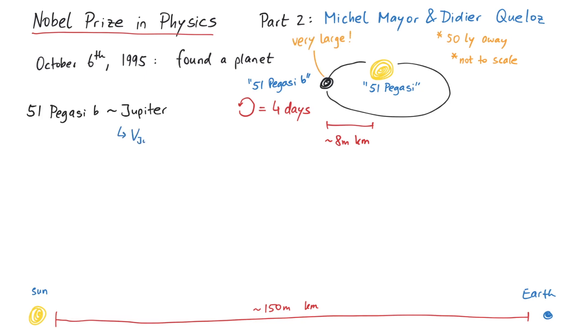The surprise regarding 51 Pegasi b was that it is very large, like Jupiter, which has a volume of around 1300 times the Earth's volume and is 300 times as heavy. According to previous knowledge how solar systems are formed, a planet like Jupiter should form very far away from its orbiting star and thus take a long time to orbit. For instance, Jupiter takes almost 12 years to orbit our Sun.